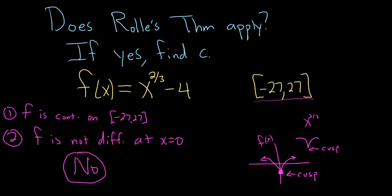A more proper answer perhaps would be f is not differentiable on the open interval negative 27 comma 27. That would be another way to explain the second condition. So you can't use Rolle's.